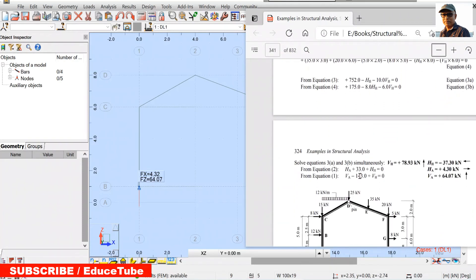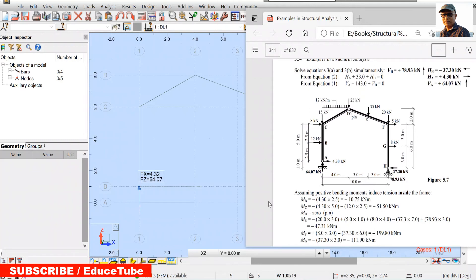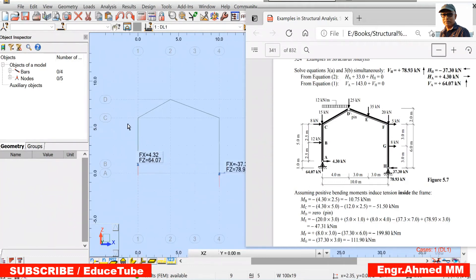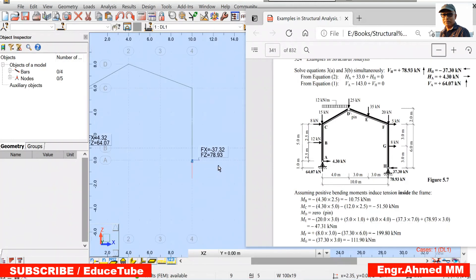And the reactions, choose effects FZ. Diagram for this. Everything you got, apply. Now you got the value. If we compare with the results what we have now, look at this. Compare 4.3, 4.32. 64.07 here, exactly 64.07. What about this one? 37.32, 37.30. What about FZ vertical? 78.93. We got 78.93. Exact value we got.